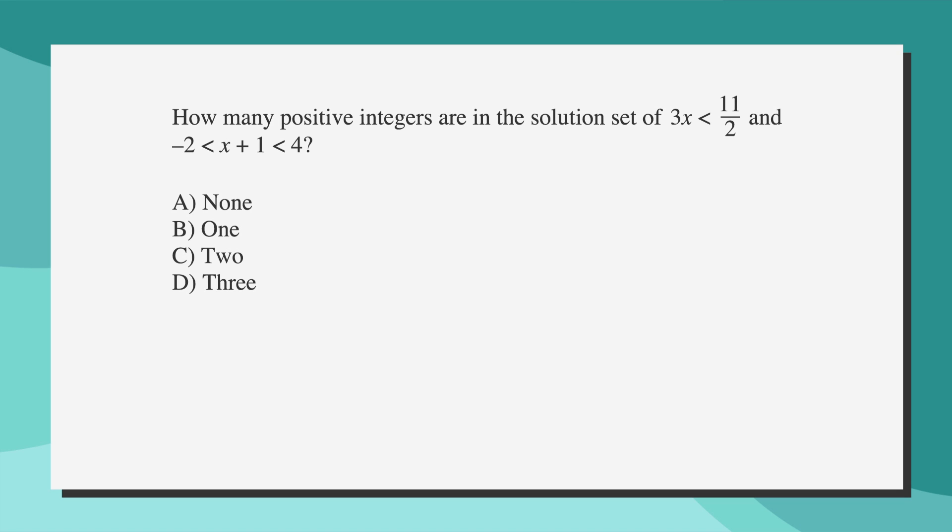Okay, now that we reviewed integers, consecutive integers, and the properties of 0, let's look at one more SAT problem before we end the lesson. How many positive integers are in the solution set of 3x < 11/2 and -2 < x+1 < 4? Our answer choices are A) none, B) 1, C) 2, and D) 3. As always, we'll start by underlining the important facts: 3x < 11/2, and -2 < x+1 < 4. Then, we want to circle the key terms: how many, positive integers, and solution set. Finally, we want to label the answer choices as the number of positive integers.